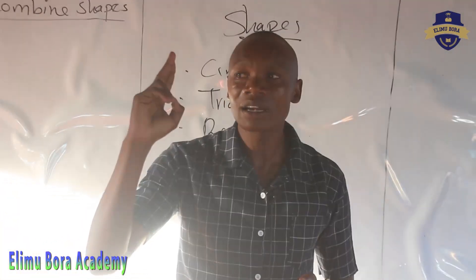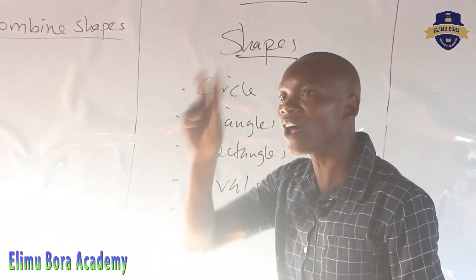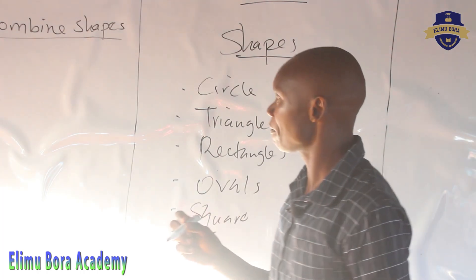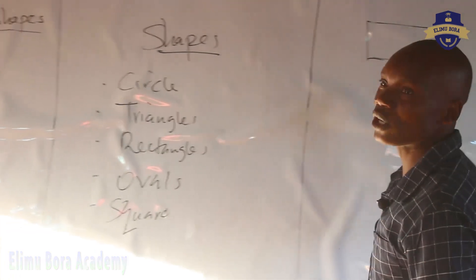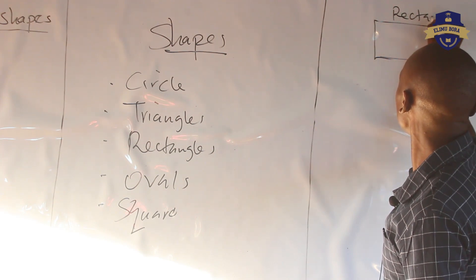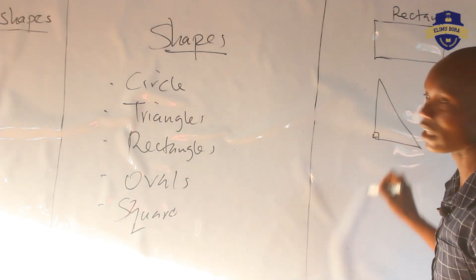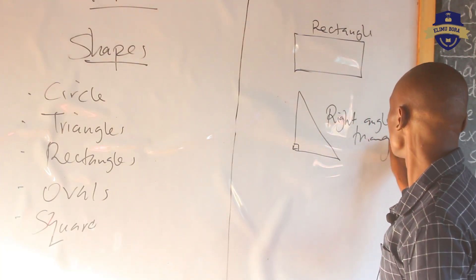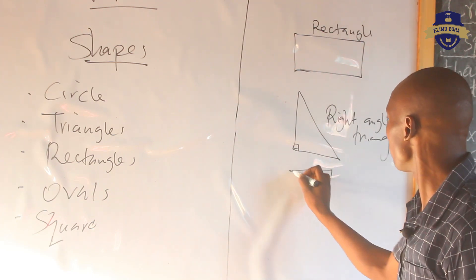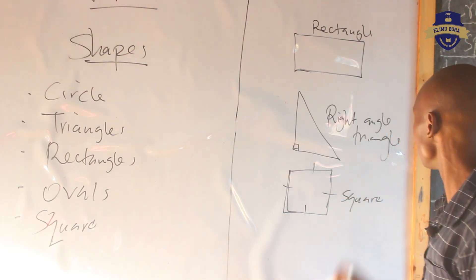So, when we are talking of area of combined shapes, we are going to deal with more than one shape. You are going to be given a mathematics problem that involves a figure, but that figure entails more than one shape. In class 5, you learned about area of a rectangle, a right-angled triangle, and a square. A square is a figure with all sides equal.